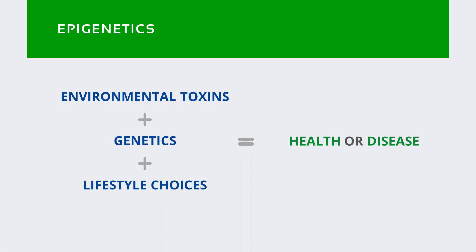There are two kinds of methylation. Methylation involves forming or breaking down proteins like stress hormones, toxins, histamine, estrogen, neurotransmitters, immune cells, coenzyme Q10, phospholipids, and DNA bases.